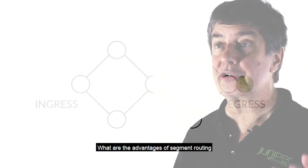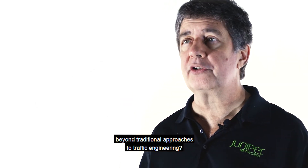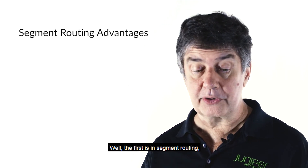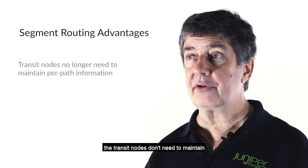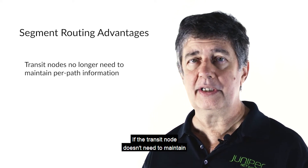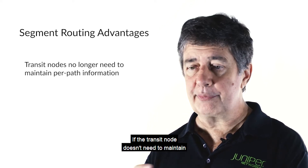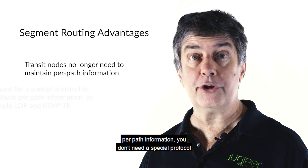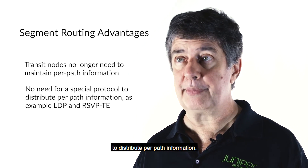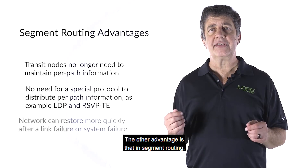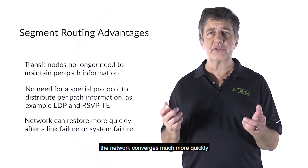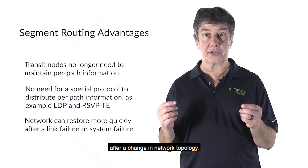What are the advantages of segment routing beyond traditional approaches to traffic engineering? The first is that in segment routing, transit nodes don't need to maintain per-path information. If the transit node doesn't need to maintain per-path information, you don't need a special protocol to distribute per-path information. The other advantage is that in segment routing, the network converges much more quickly after a change in network topology.